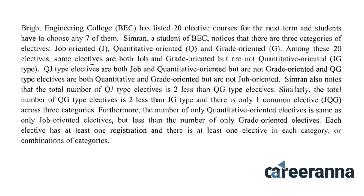Among these 20 electives, some electives are both job and grade oriented but not quantitative oriented — that is JG type. QJ type electives are both job and quantitative oriented but not grade oriented. And lastly, QG type electives are both quantitative and grade oriented but not job oriented.